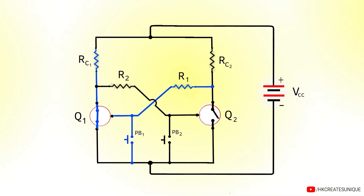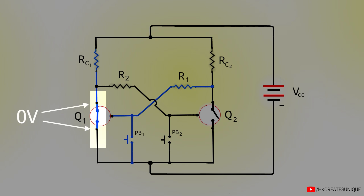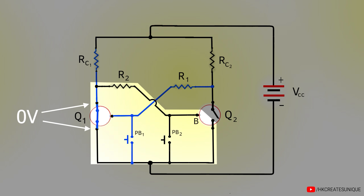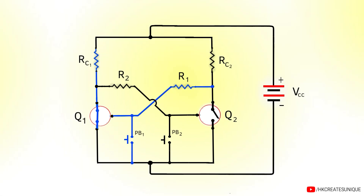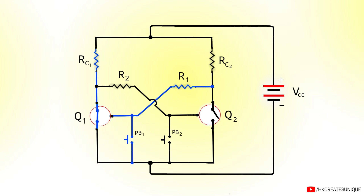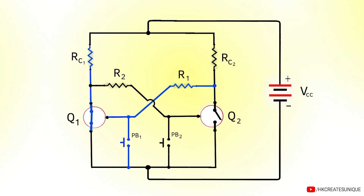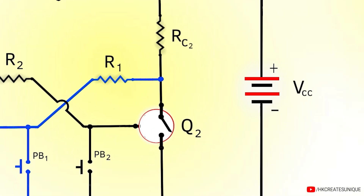Once Q1 is on, the voltage between its collector and emitter becomes 0 volts. This 0 volts appears between the base and emitter of Q2, so Q2 remains off because it requires 0.7 volts to turn on. Since Q2 is off, current easily flows through the base of Q1, keeping it on indefinitely. The circuit is now in a stable state: Q1 is on and Q2 is off, and it stores this information indefinitely.